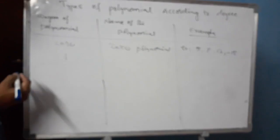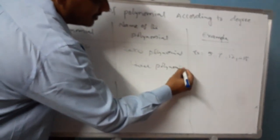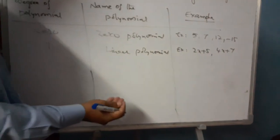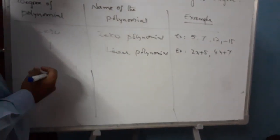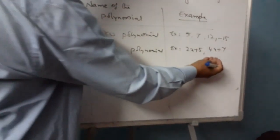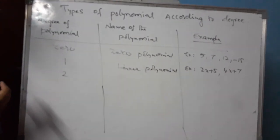If the degree of the polynomial is 1, the name of the polynomial is linear polynomial. Examples: 2x plus 5, 4x plus 7. The highest power of x is 1, so the degree of this polynomial is 1, and it is known as the linear polynomial.